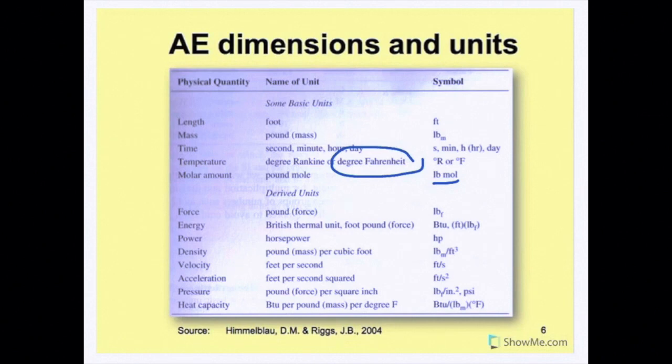As for the derived units in AE, for force, they use the pound force. Here we see the pound again, but this is different from the pound that we saw before. The pound mass is for mass, while the pound force is for force. So they use the same unit for it, except one is for mass and one is for force. That's why it's very important to include the subscripts here to show which one we are referring to, because people have confused the usage of these two pounds before.